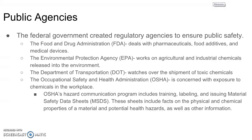The Environmental Protection Agency works with factories and power plants — especially nuclear power plants — to determine how much byproduct they are releasing into the environment. They determine what is the safe amount to release into the environment and work with those different factories and power plants.